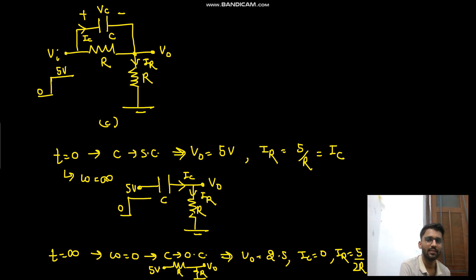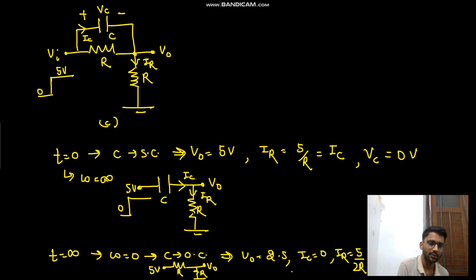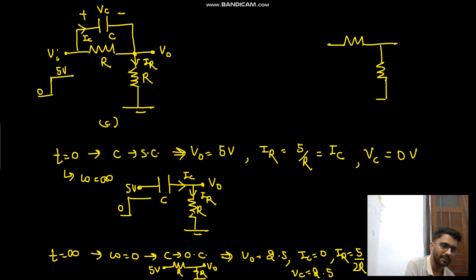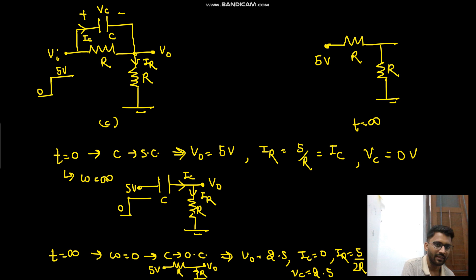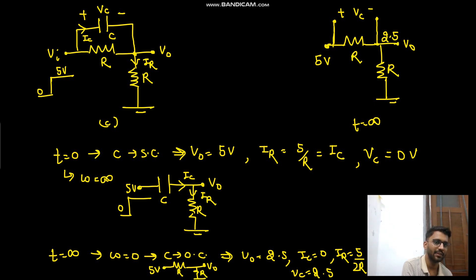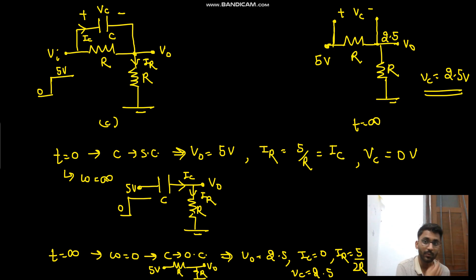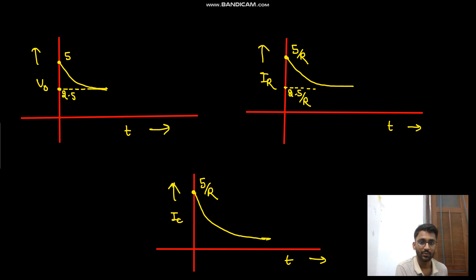For vc: at t=0 the capacitor is short-circuited, so vc equals 0 volts. At t=∞ the capacitor is open-circuited; the circuit becomes two resistors R and R across 5 volts, giving v_node = 2.5V by voltage division. The voltage across the capacitor is 5 minus 2.5, which equals 2.5 volts. So vc increases from 0 to 2.5 volts.